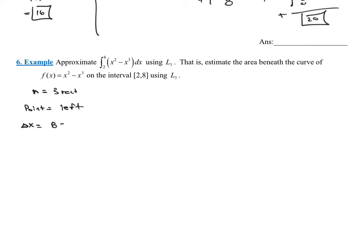So let's just do the actual problem. It says how many rectangles? We want three rectangles. Which point are we going to be using to determine the height? We're going to be using the left endpoint of each one of those. We need to find the width of every single one of those intervals. So the right endpoint is 8. The left endpoint is 2. Divide that by the number of rectangles, which was 3. So 8 minus 2 is 6. 6 divided by 3 is 2. So the width of each rectangle is 2.